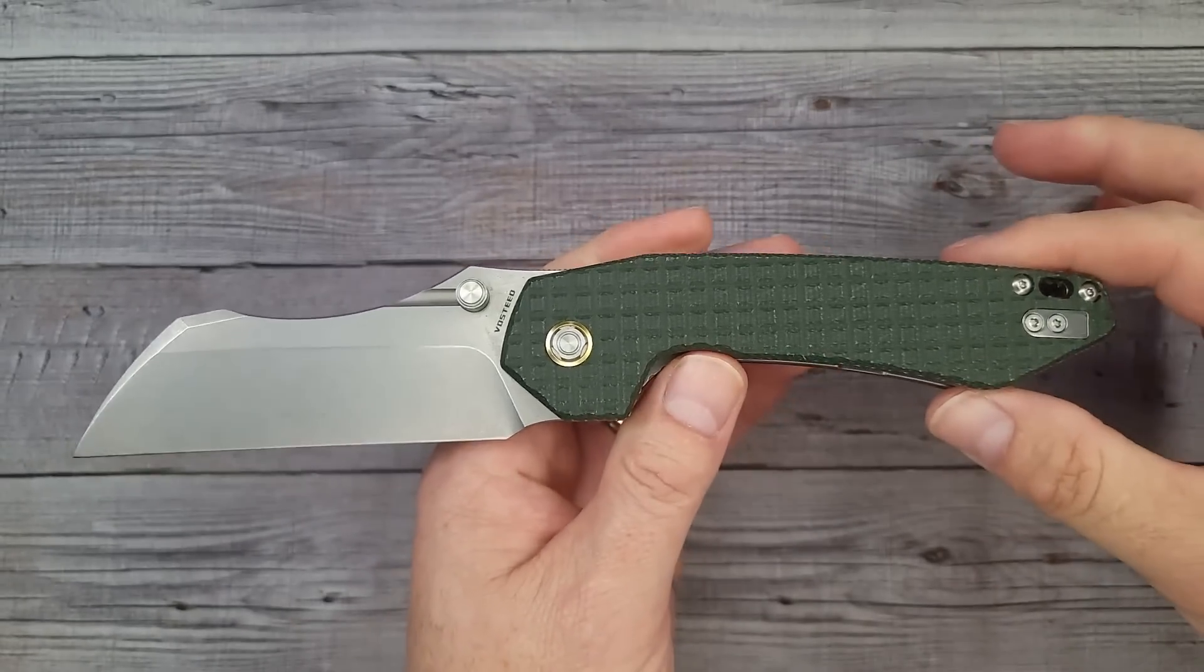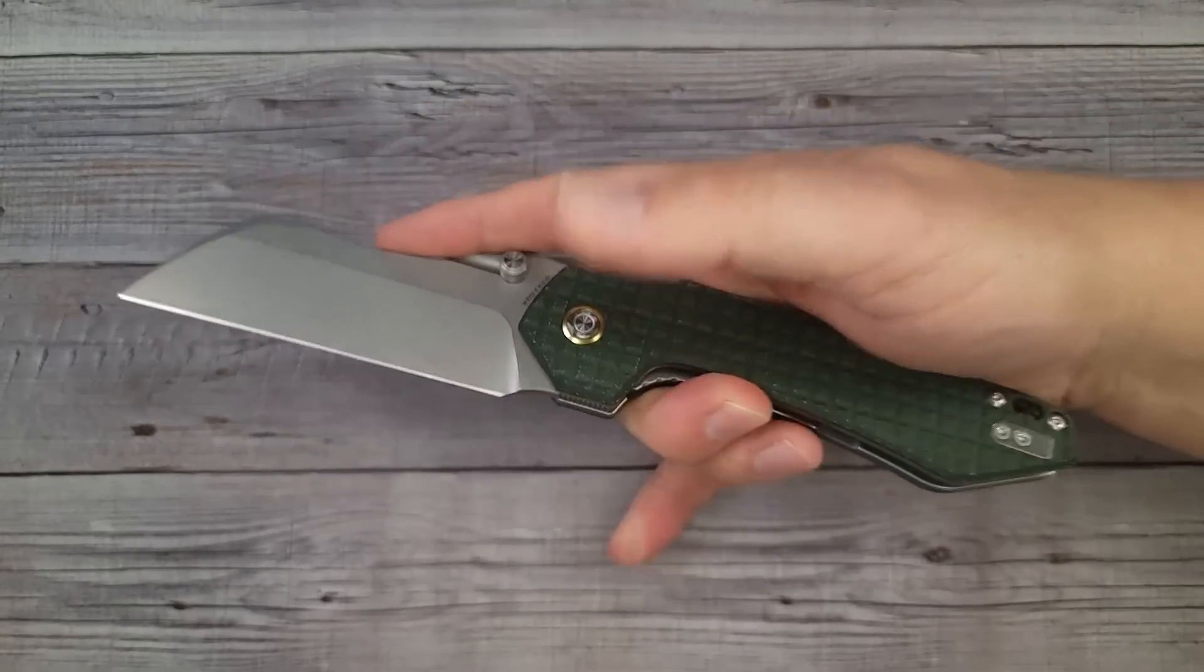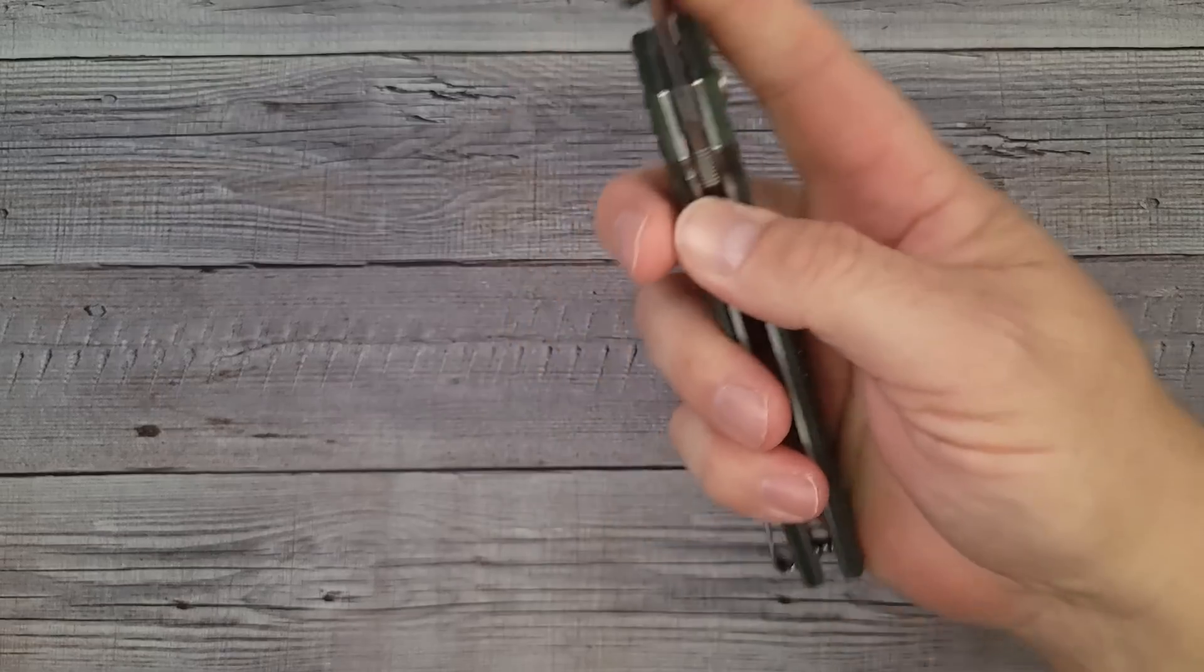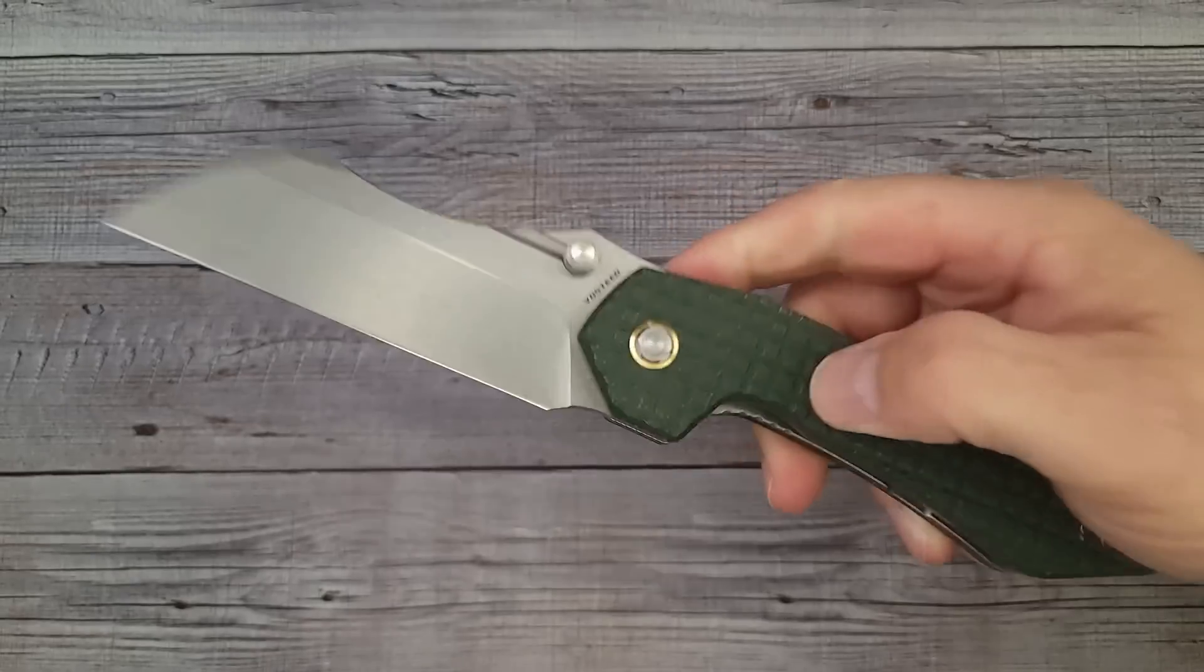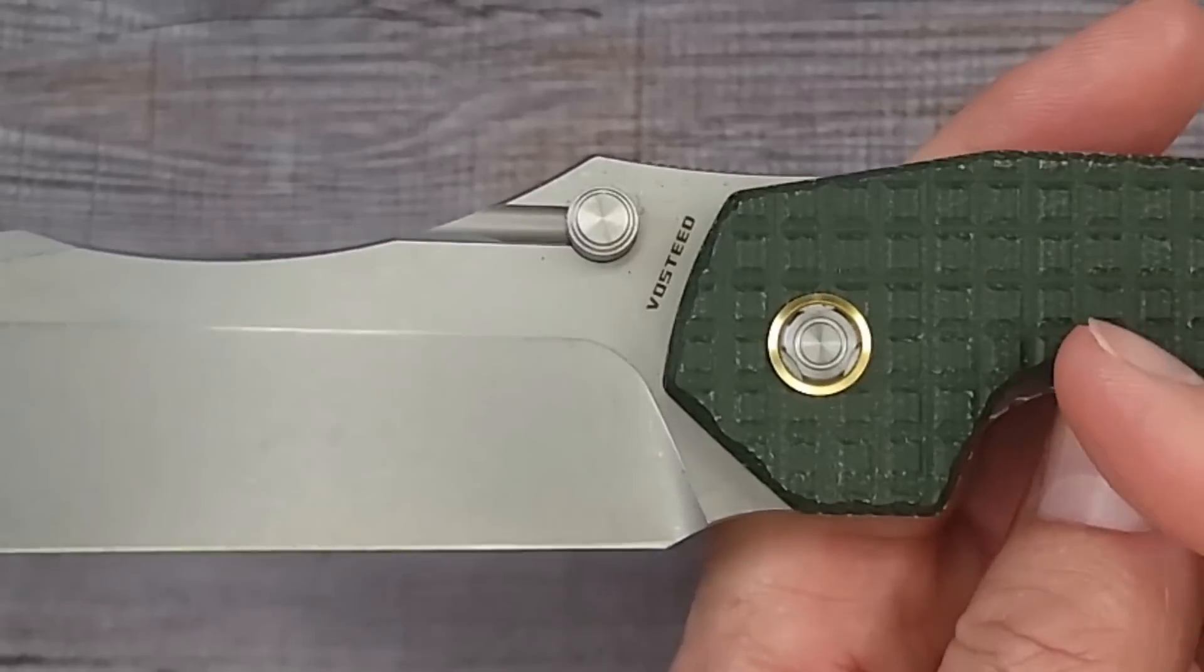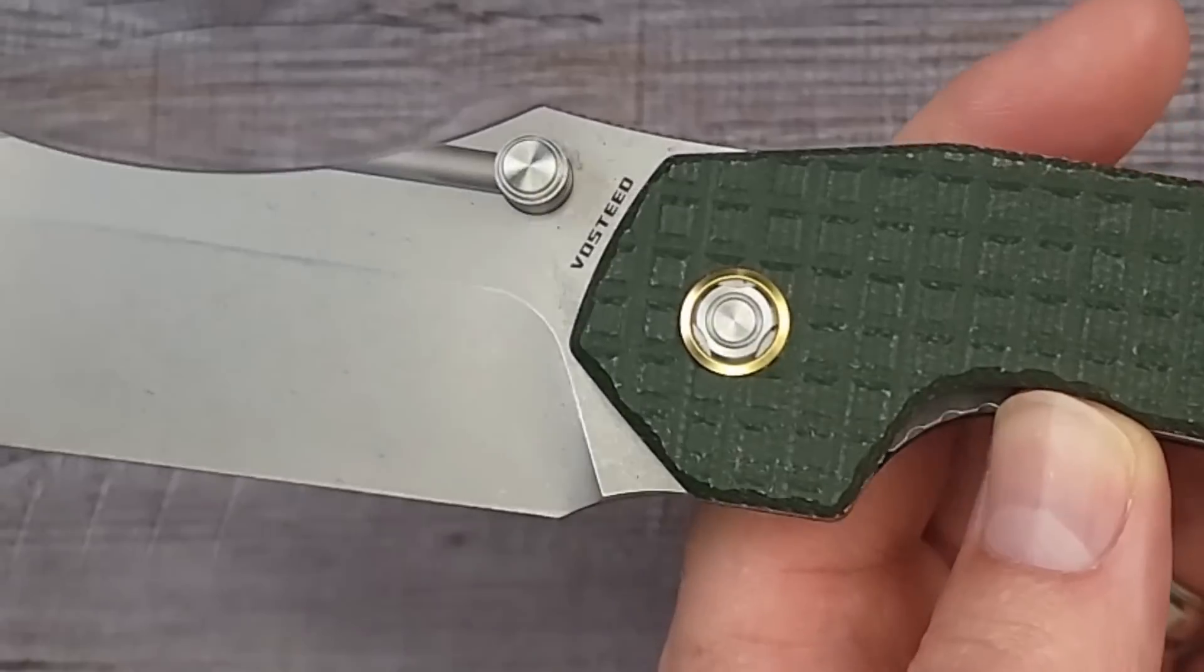Speaking of flats, this one is ambidextrous. It's pretty deepish carry and inset into the liners. Vasteed knows what they're doing when it comes to making knives. They make the bigger ones, the smaller ones, the everyday size carry, and the lightweight. I like them all. I've liked every single Vasteed I've got. I think this one's going to surprise most people. This one's usually like $69-70, right now you can get these for $58 and change.